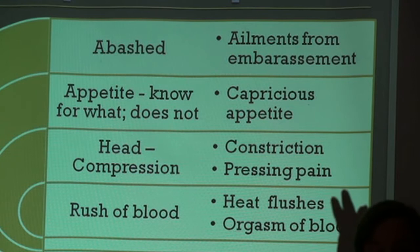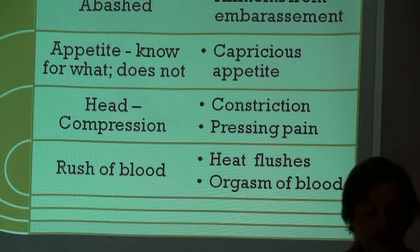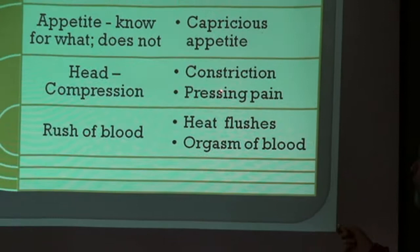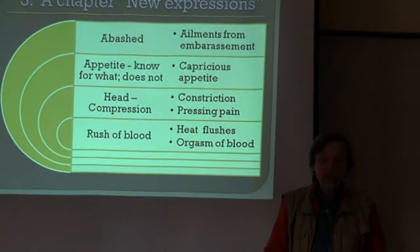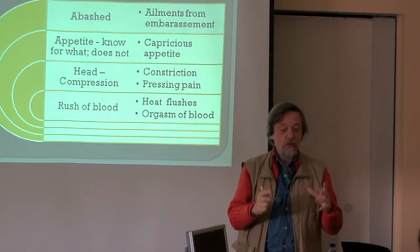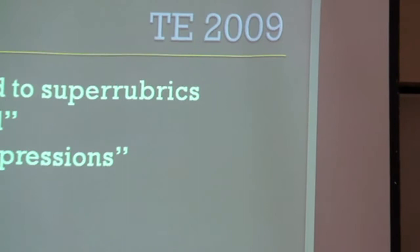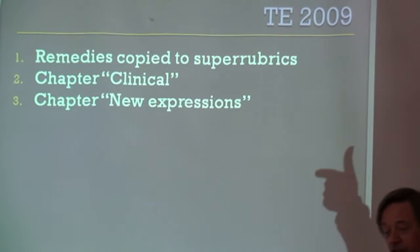The second situation in new expressions is when a certain expression should be linked to more than one rubric. For example, 'I have a feeling of compression in the head' — you can think of remedies which have a constriction of the head, but also remedies which have a pressing pain in the head. So we combined those rubrics, and 'compression in the head' now contains the remedies of both constriction and pressing pain. In summary, the Treasure Edition 2009 has three new sections: remedies copied to super-rubrics, a chapter Clinical, and a chapter New Expressions.